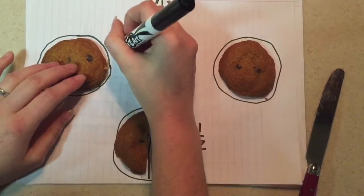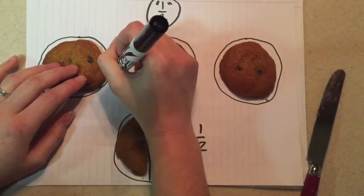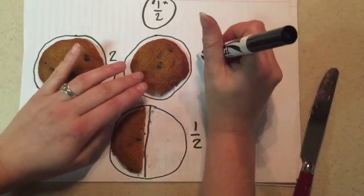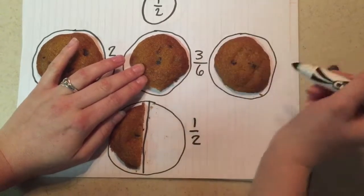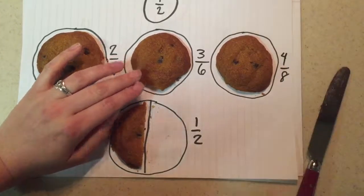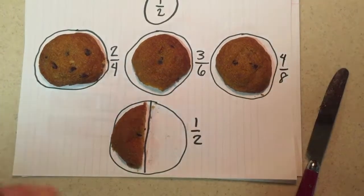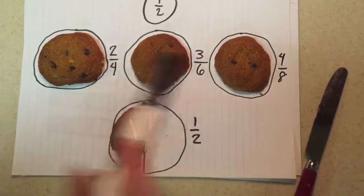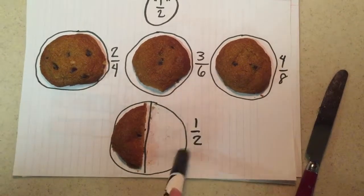Two-fourths, three-sixths, and four-eighths are all three equivalent fractions to one-half.